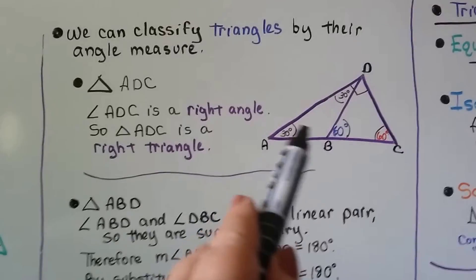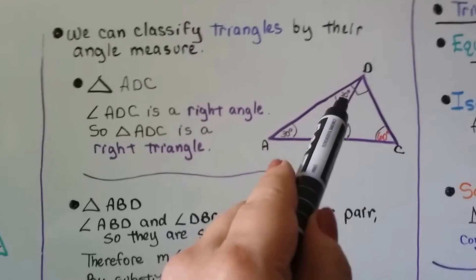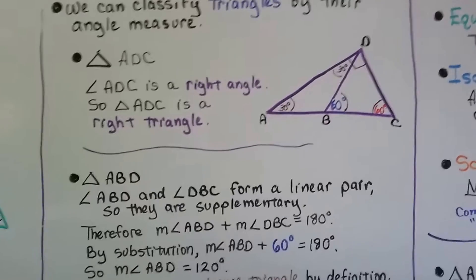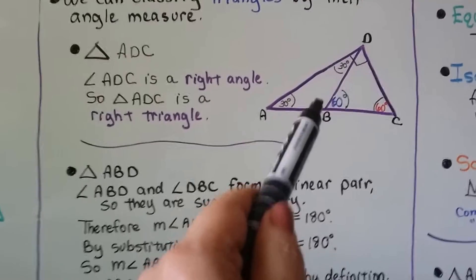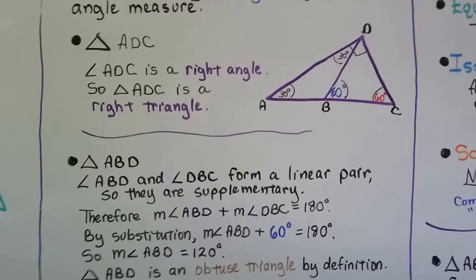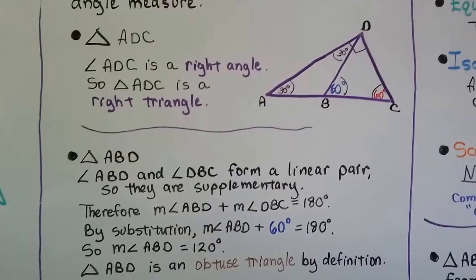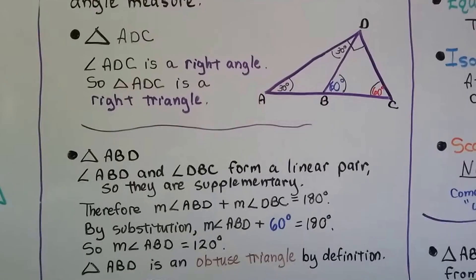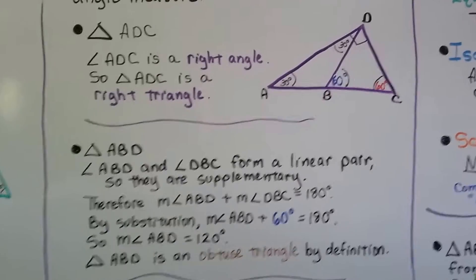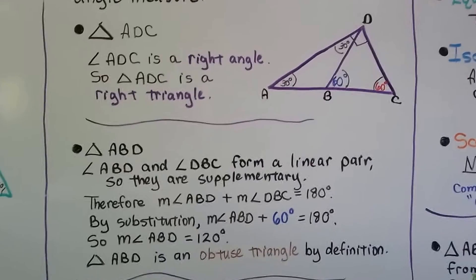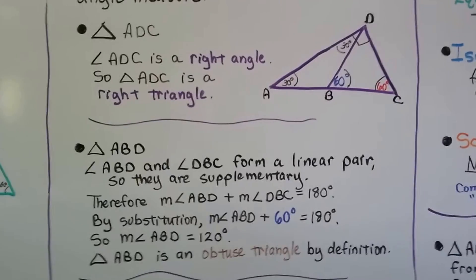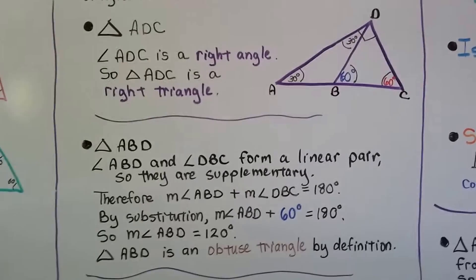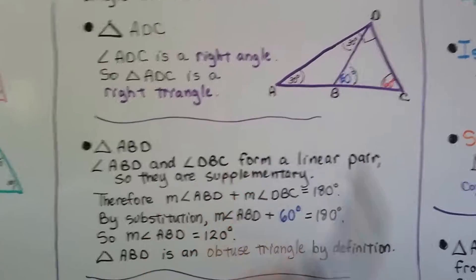Triangle ABD is on one side. We can see one angle measures 30 and another measures 30, but there's nothing given for the third. Angle ABD and angle DBC form a linear pair, so they're supplementary — 180 degrees. The measure of angle ABD plus the blue 60-degree angle equals 180 degrees, so angle ABD must be 120 degrees. Therefore, triangle ABD is an obtuse triangle because it contains that 120-degree angle.